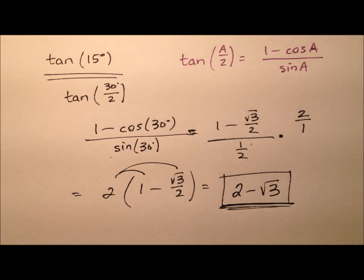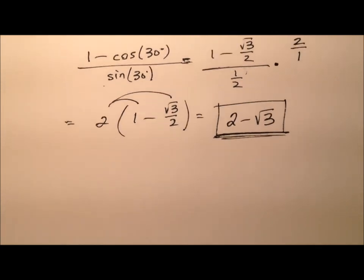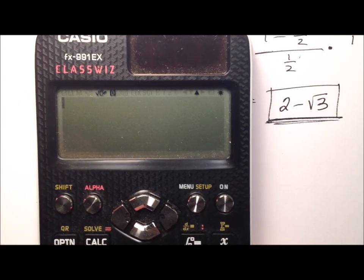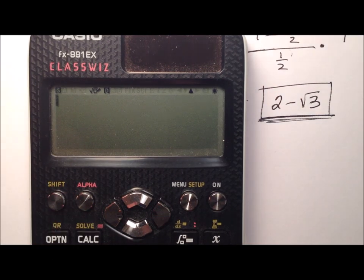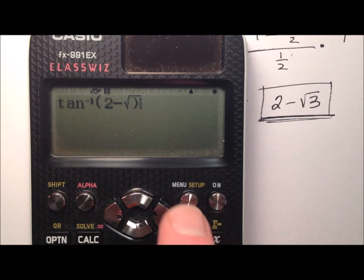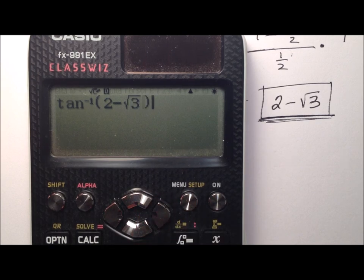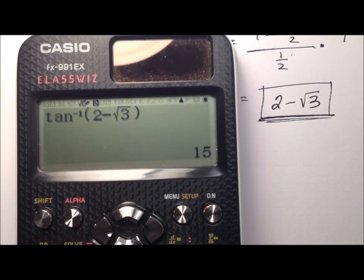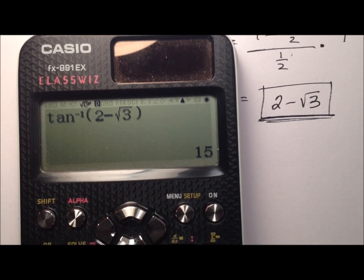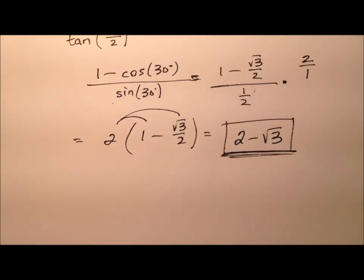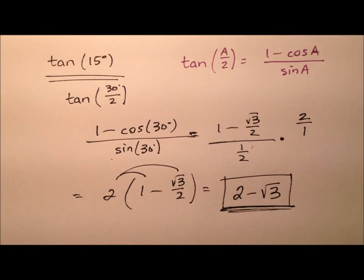Let's grab our calculator and just throw that value in to make sure it's correct. We're going to do inverse tangent of 2 minus the square root of 3, and yes — 15 degrees. So the exact value for the tangent of 15 degrees is 2 minus the square root of 3, and we just worked that out three different ways.